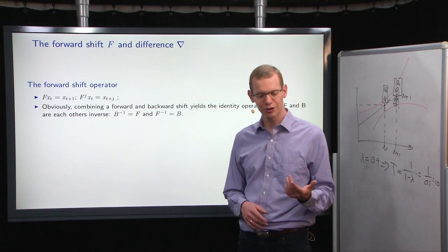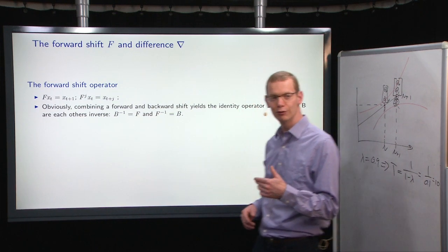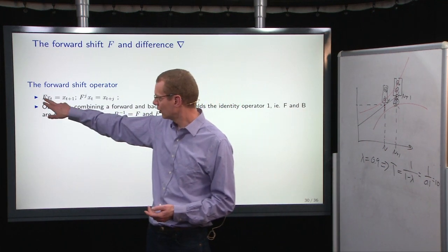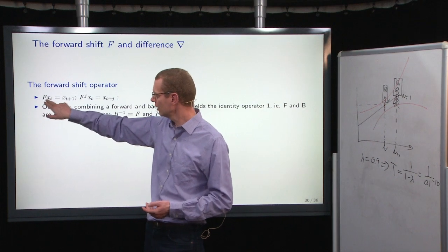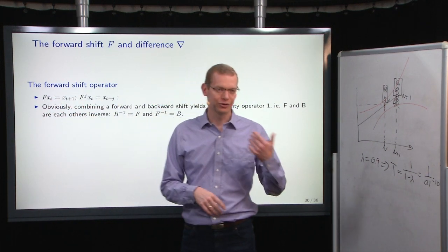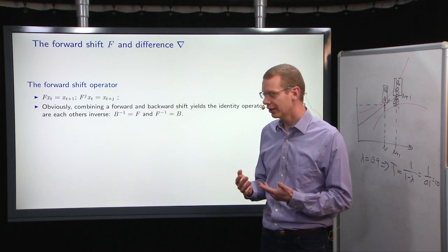The first thing to look at is rather than going backwards, we can go forward. So the forward shift operator, when you call it F, when you apply that to x_t, you get x_{t+1}. And of course, F to the j power steps forward in time. That's transparent.